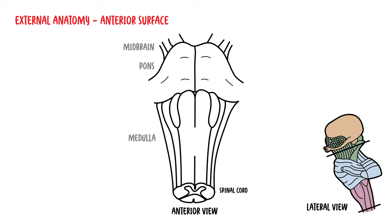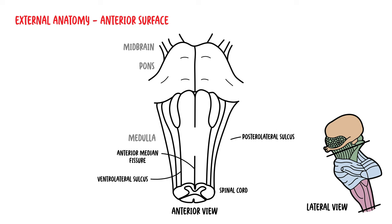Let's focus on the external anatomy of the medulla, specifically the anterior surface. At the midline you'll find the anterior median fissure, which is continuous along the length of the spinal cord. As you move lateral from the midline, there are two sulci: the ventrolateral sulcus and the posterolateral sulcus. You can find the pyramids here.